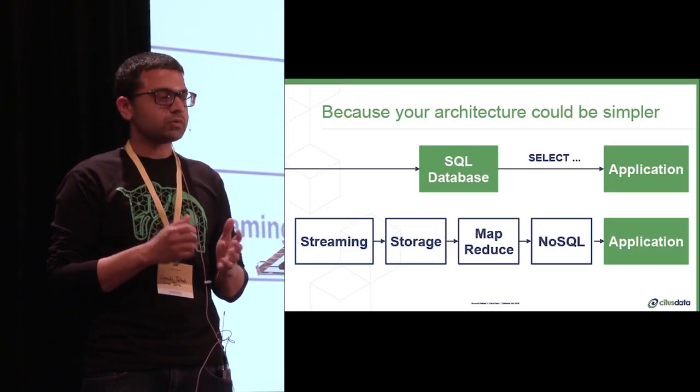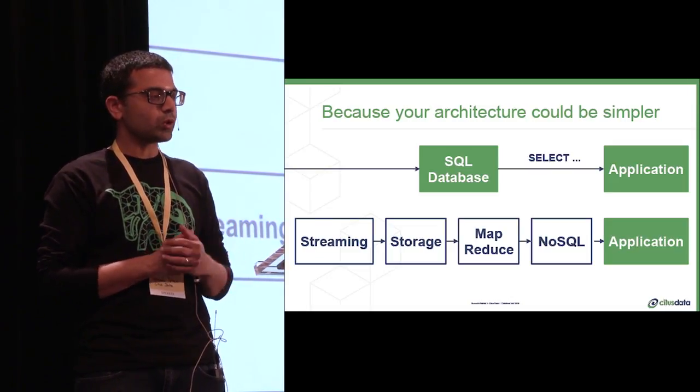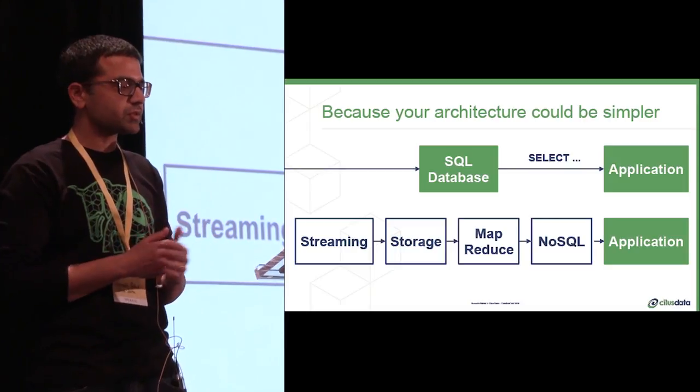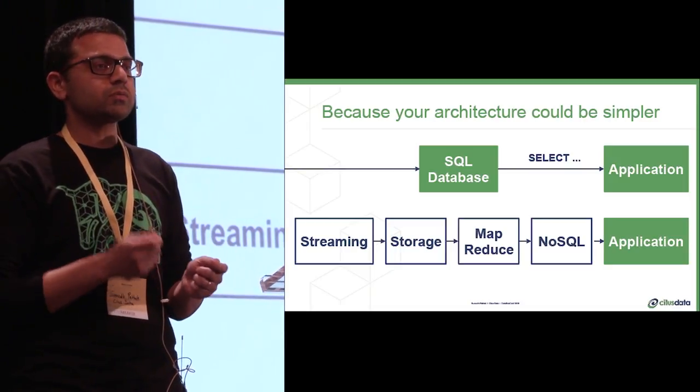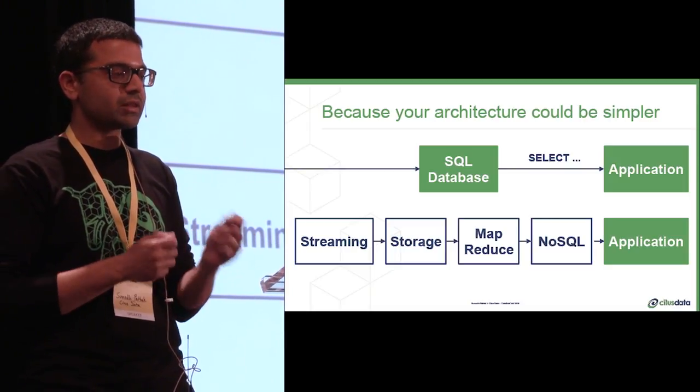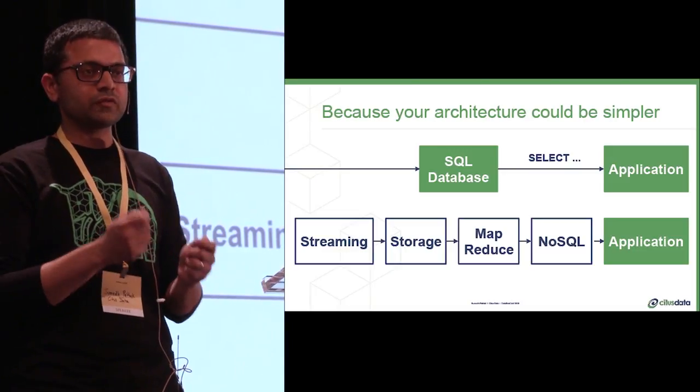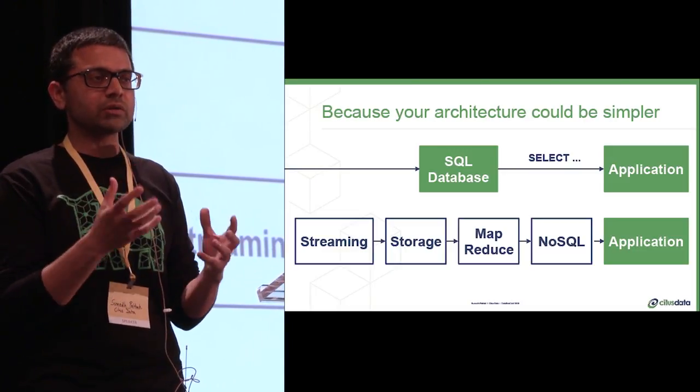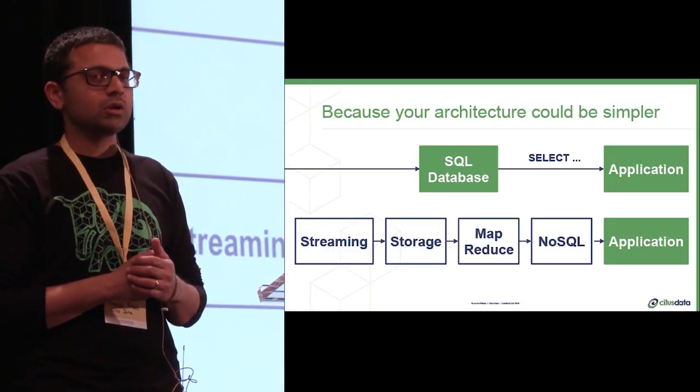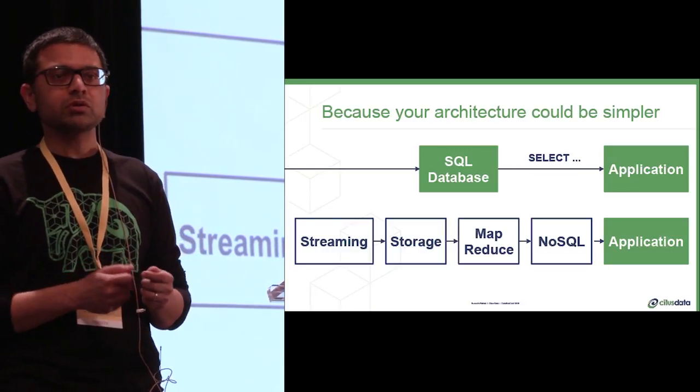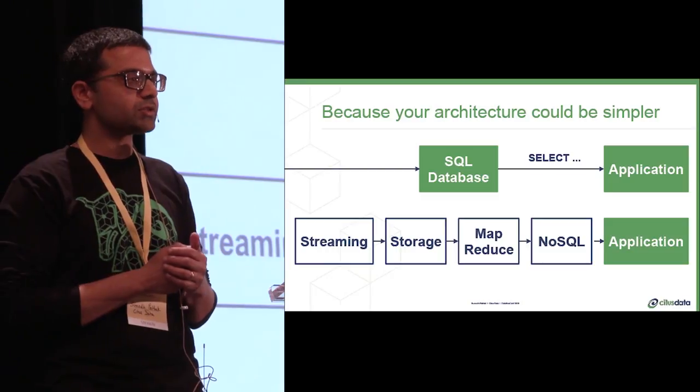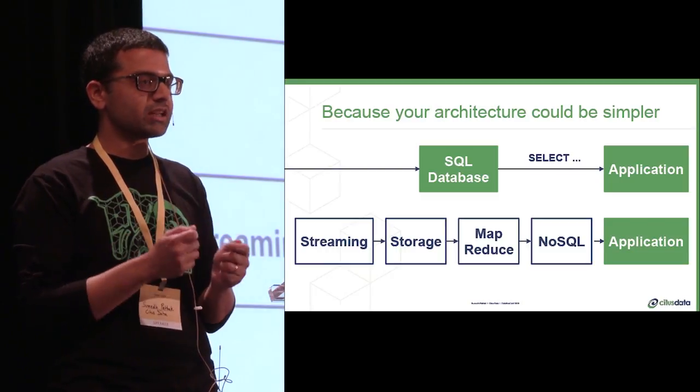Because your architecture could be simpler. Today, companies are deploying five, six, seven different systems. One for short-term, one for long-term storage, for analytics, for caching, et cetera. You have the Hadoop, Kafka, Spark, and then you have plumbing to tie all of these together. And then there is a human cost as well, in terms of bringing people up to speed with these systems to set them up and then manage them.